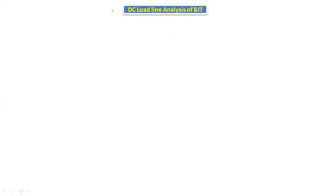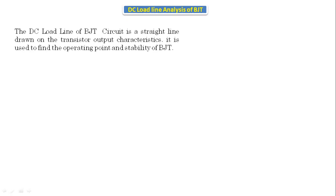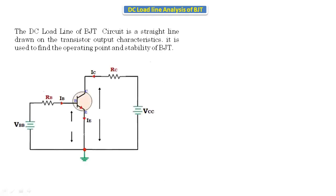Hello everyone, today we are going to discuss the DC load line analysis of BJT, that is bipolar junction transistor. The DC load line of a BJT circuit is a straight line drawn on the transistor output characteristics. This line is used to find the operating point and the stability of the bipolar junction transistor — whether it is in the stable region or not.